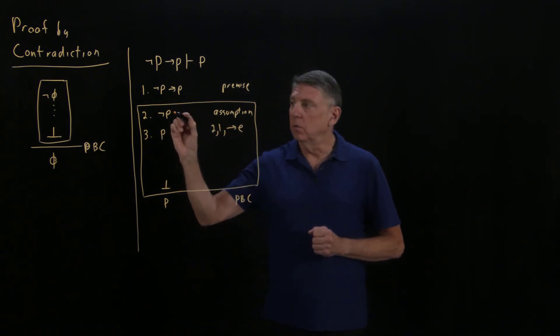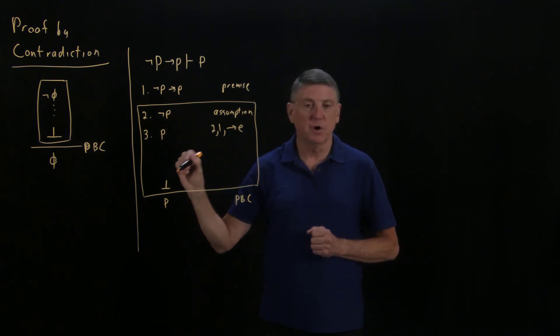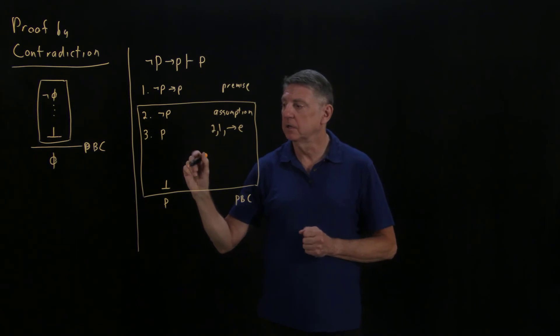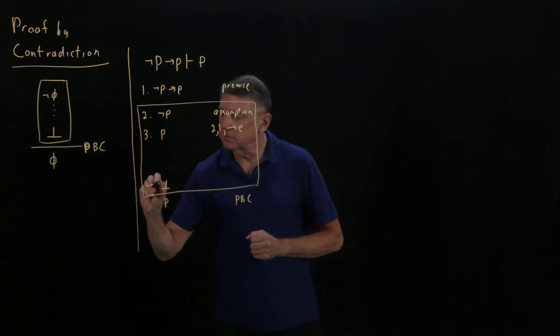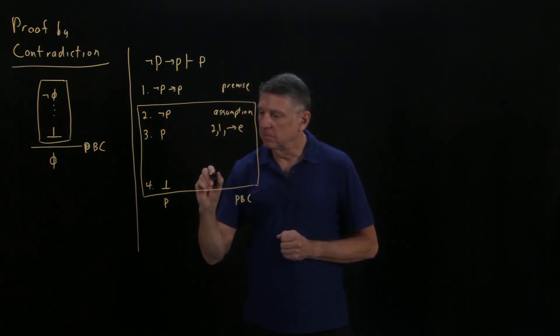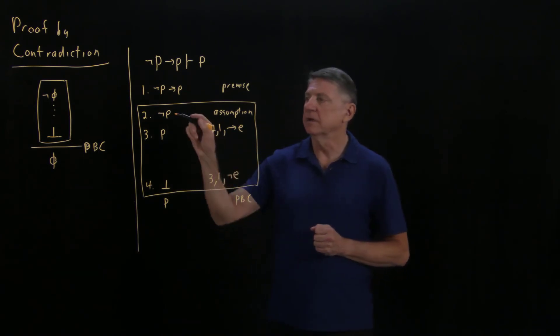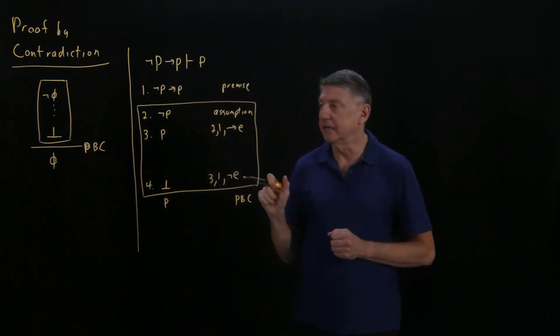We already know that if we have a formula on one line and the negation of a formula on another line, we can deduce the bottom symbol or the contradiction. So that now becomes line 4 of our proof. We arrived at that from line 3 and line 1, and that is negation elimination, because it eliminates that negated formula.